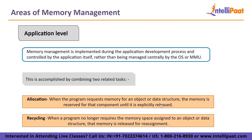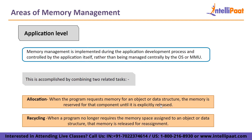At the application level, memory management is implemented during the application development process and controlled by the application itself rather than being managed centrally by the operating system or memory management unit. This type of memory management ensures that enough memory is available for the program's objects and data structures. This is accomplished by combining two related tasks. The first is allocation — when the program requests memory for an object or data structure, the memory is reserved for that component until it is explicitly released. If the allocation is manual, the developer must explicitly program it into the code. If the process is automatic, a memory manager handles the allocation, assigning the necessary memory to the object using a component called an allocator.